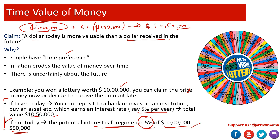These two decisions are preference-based — the later decision had a preference for claiming the prize a year later, while the former claimed immediately. Number one is time preference. Number two is that it's very common as an investor or individual to acknowledge that inflation tends to erode the value of money over time — the increase in prices erodes the value of your money, so a dollar today is more valuable than a dollar in the future.